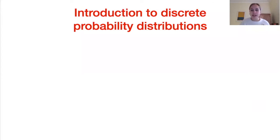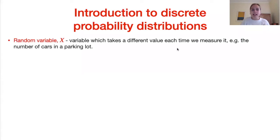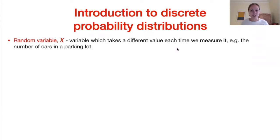A little introduction to discrete probability distributions. Let's start with some definitions. First, a random variable x is a variable which takes a different value every time we measure it. In the discrete case — remember, discrete is counting things, whereas continuous is things we can measure — a random variable could be something like the number of cars in a parking lot or the number of fish in a pond.